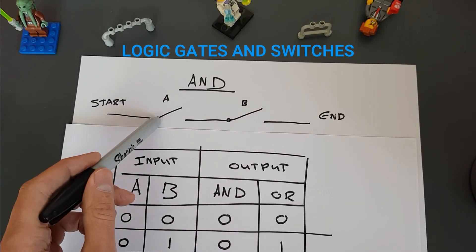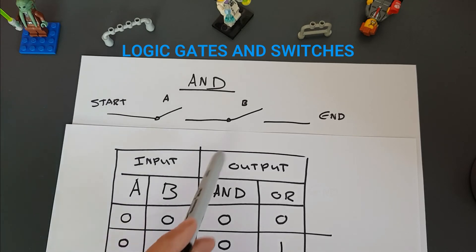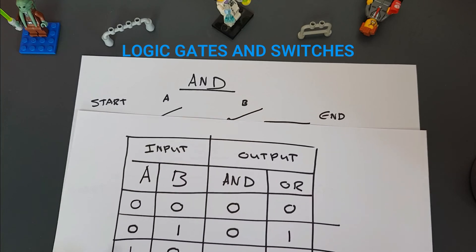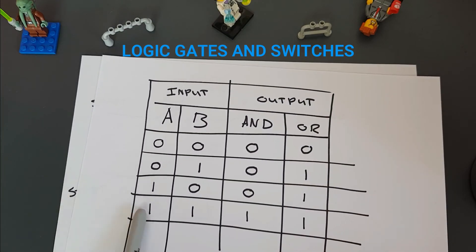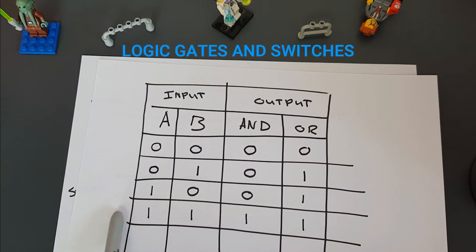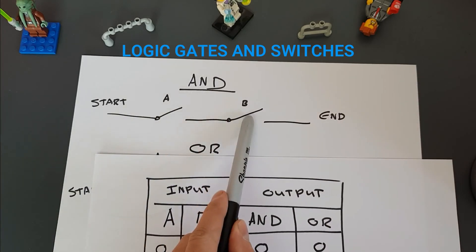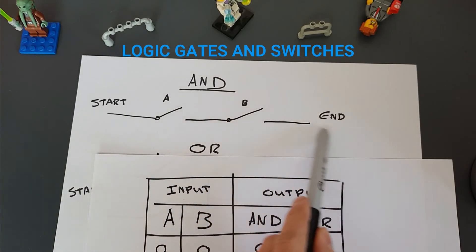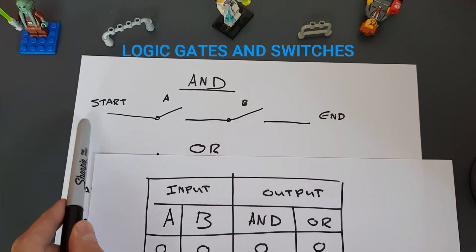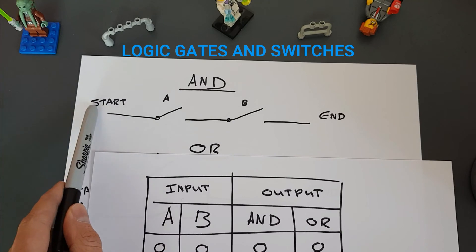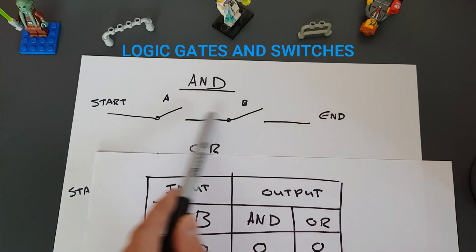If A is OFF and B is ON, still not going to be a path for it to get through. It's only when both of them are closed that it's going to output TRUE. So both this and this need to be closed for the logic gate to allow something to go from start to end. So for it to be TRUE at the output, both of these need to be TRUE.